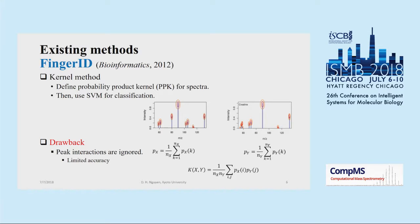Before presenting our proposed method, we want to review some existing methods. Notably, the current state-of-the-art methods are mainly based on kernel learning. They define some kernels for spectra and then use a support vector machine for classification. The first method I would like to mention is Finger ID. In this method, they use a probability product kernel to define kernels for spectra and then use a support vector machine. The idea behind PPK is that they consider each peak as a two-dimensional Gaussian distribution and the spectrum as a mixture of component distributions, calculating matching of all pairs of component distributions. However, the drawback of this method is that peak interactions are ignored, leading to limited predictive performance.